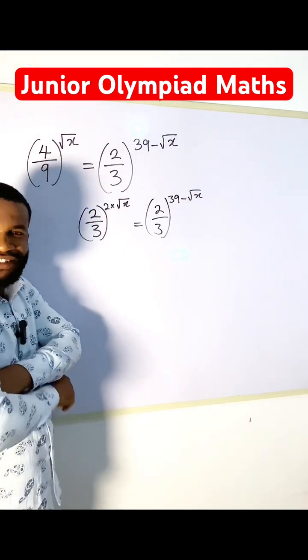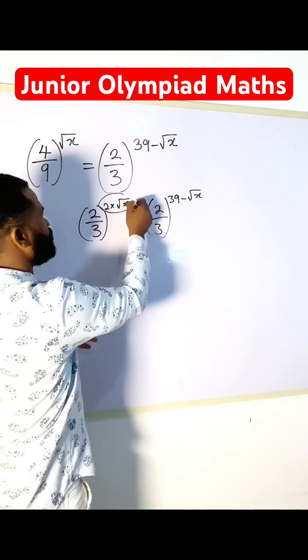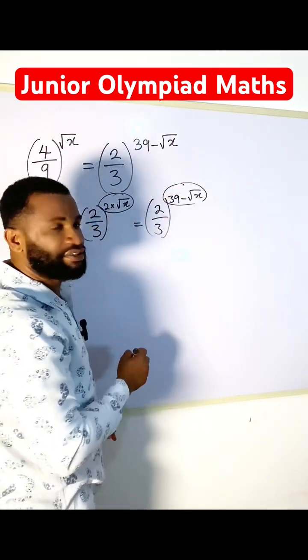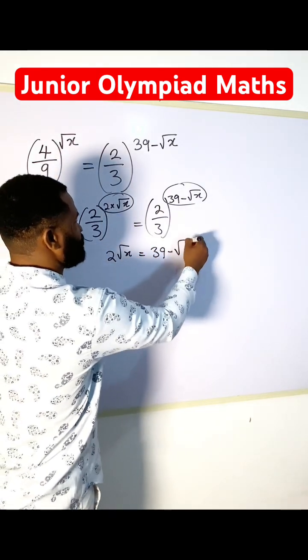Alright, in this case, the two bases are the same, so I'm going to equate the powers. So I'm having 2 root x is equal to 39 minus root x.